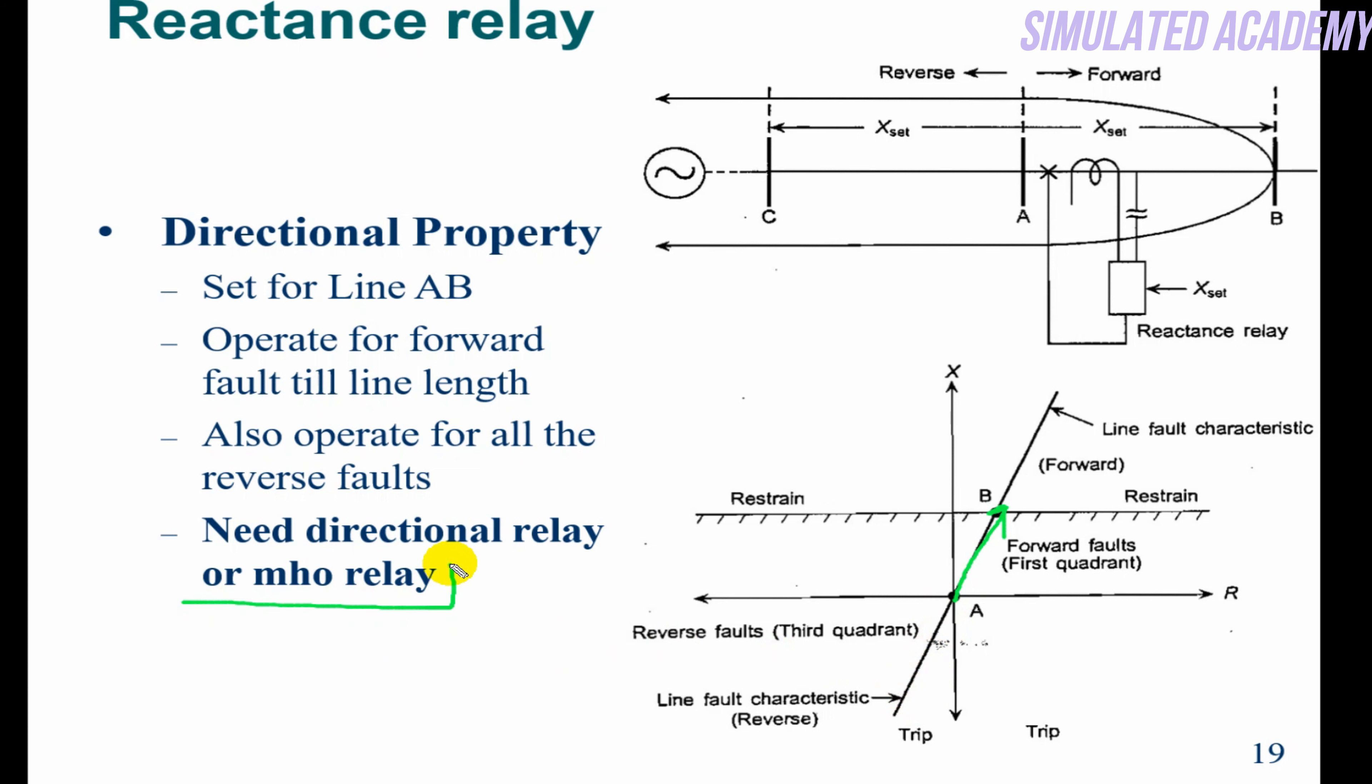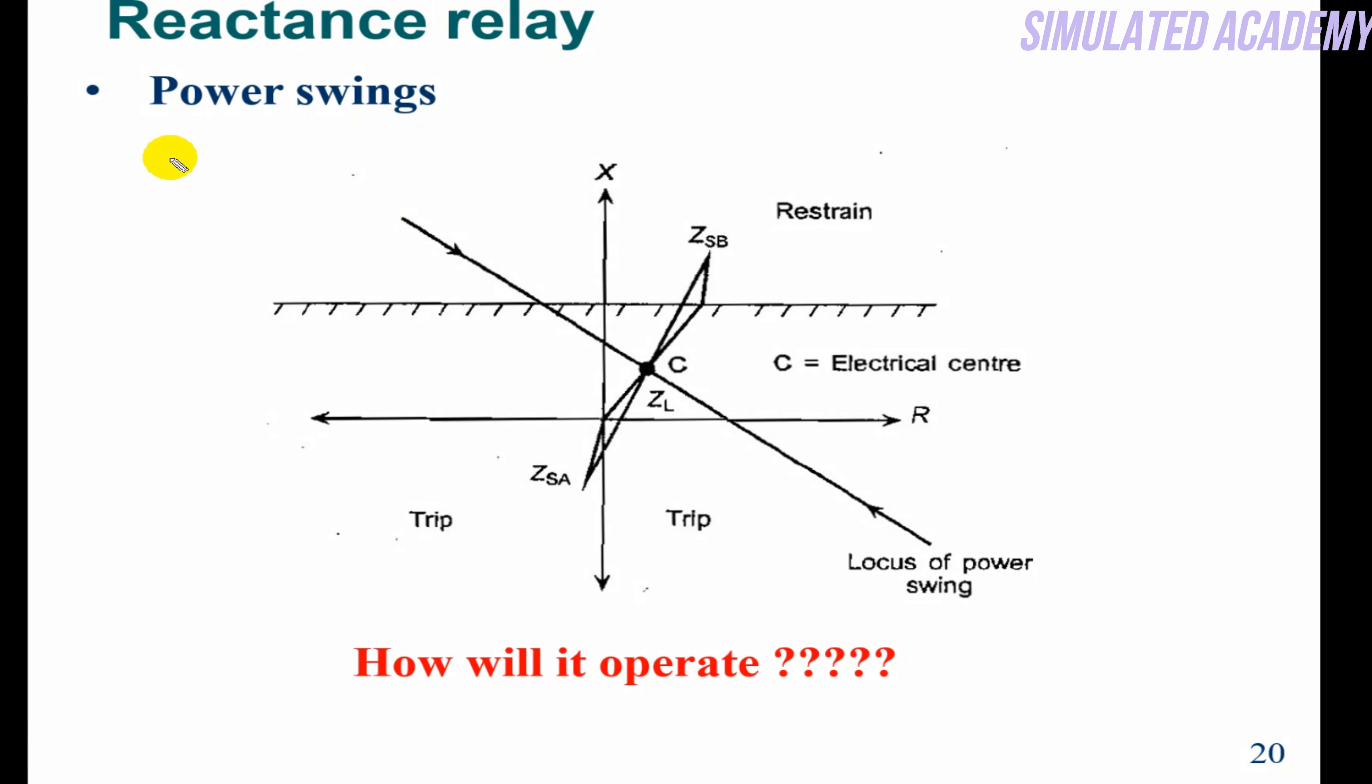Power swings: we discussed this in the last lecture. If the load changes or, for example, a disturbance occurs—switches operate or a fault comes—power will change. Power changes because the rotor angle δ changes.